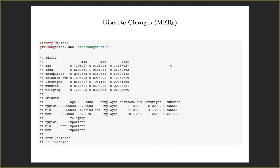Because this is a GLM, we can use all the same functions we've used before. Using GLM change, we see that as age moves by one standard deviation around its mean, we increase the number of organizations by about 0.14. A standard deviation in education gives an increase of about 0.35. The biggest effect is unemployment: going from not employed to employed increases voluntary organization membership by about 0.6.